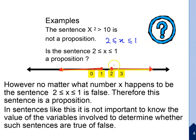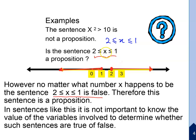No matter what number x happens to be, the sentence '2 ≤ x ≤ 1' is false, because there is no number that is both greater than or equal to 2 and less than or equal to 1. Therefore, this sentence is a proposition — it is always false.